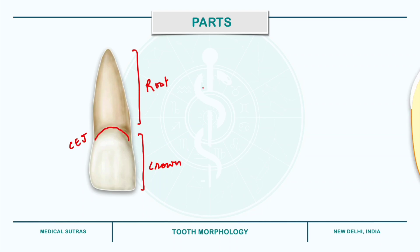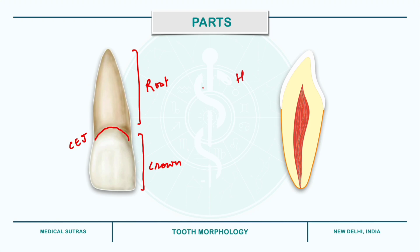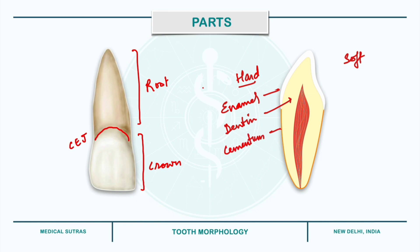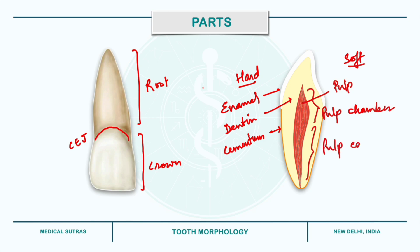If you look at a longitudinal section of a tooth, it is composed of both hard and soft tissues. The hard tissues include enamel, dentine, and cementum, while the soft tissue includes the pulp, which houses the blood vessels and nerves supplying the tooth. The pulp can further be subdivided as the pulp chamber, present in the crown portion, and the pulp canal, present in the root portion. These two are collectively referred to as the pulp cavity.